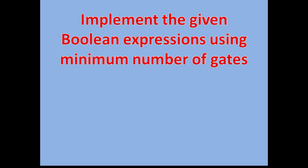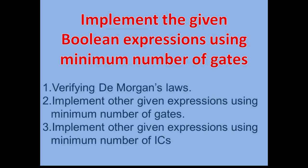Today we'll be doing the session on implementing a given Boolean expression using the minimum number of gates. We'll cover three topics: first, verify DeMorgan's laws; second, implement given expressions using minimum number of gates by reducing the expression; and third, implement that using a minimum number of ICs.